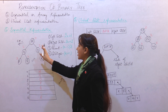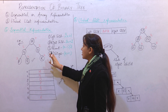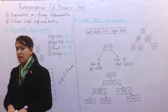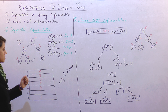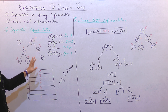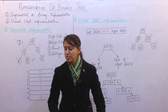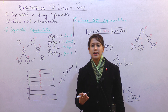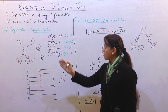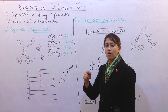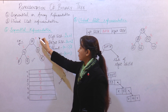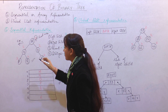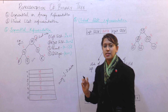Now we will see how we can represent this binary tree into sequential or array representation. First of all, we will give numbering to our nodes. Numbering to our nodes means we will assign numbers starting from the root node to the last children of this binary tree. The address of the array always starts from 0, so for this representation we will always start our first node with 0. That's why we have represented the root node with 0.